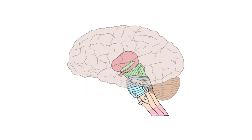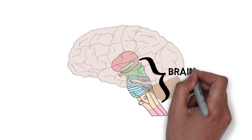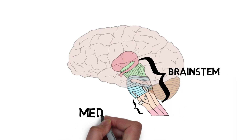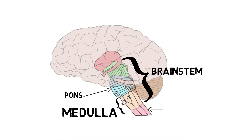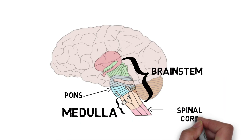The medulla oblongata, or the medulla, is the lowest part of the brainstem, found below the pons and above the spinal cord. There is no clear separation between the medulla and the spinal cord. Instead, the spinal cord gradually transitions into the medulla.